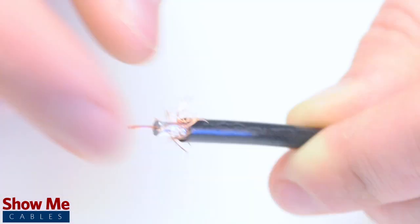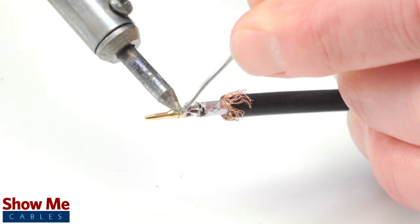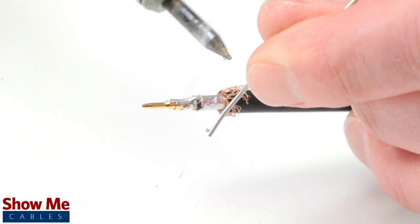Pull back the braided shield and insert the pin onto the center conductor. Solder the pin onto the center conductor and insert the connector housing over the cable.